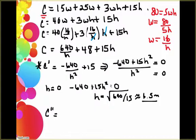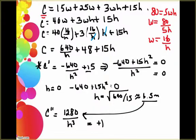Well when I do that, I'm going to get a positive 1280 over h cubed, and then the derivative of 15 would just be zero. And if I put 6.5 into that, I know that my answer is going to be positive, which tells me that this point was my minimum.